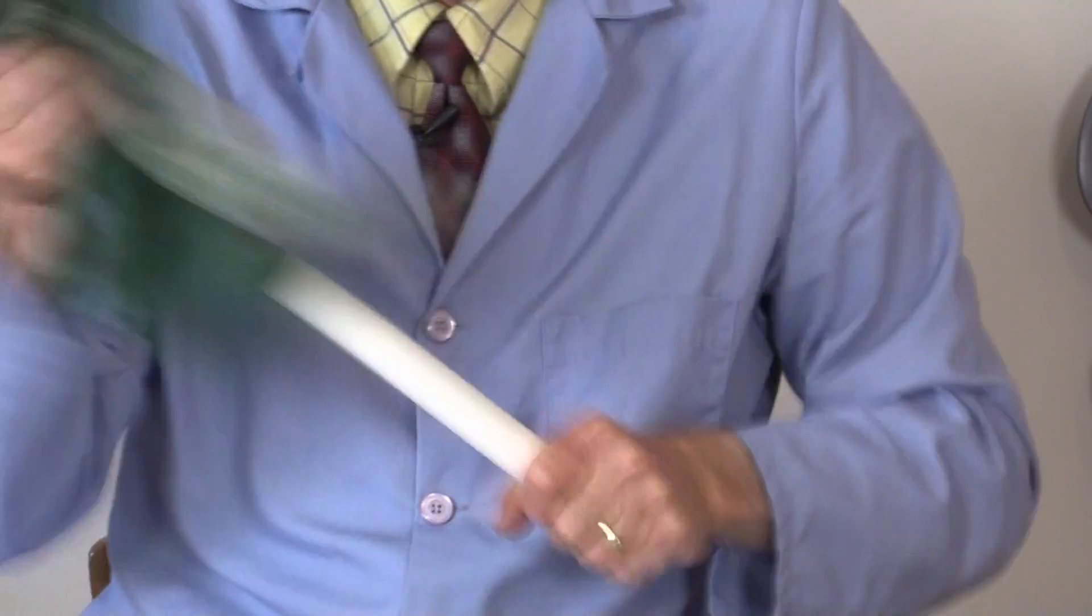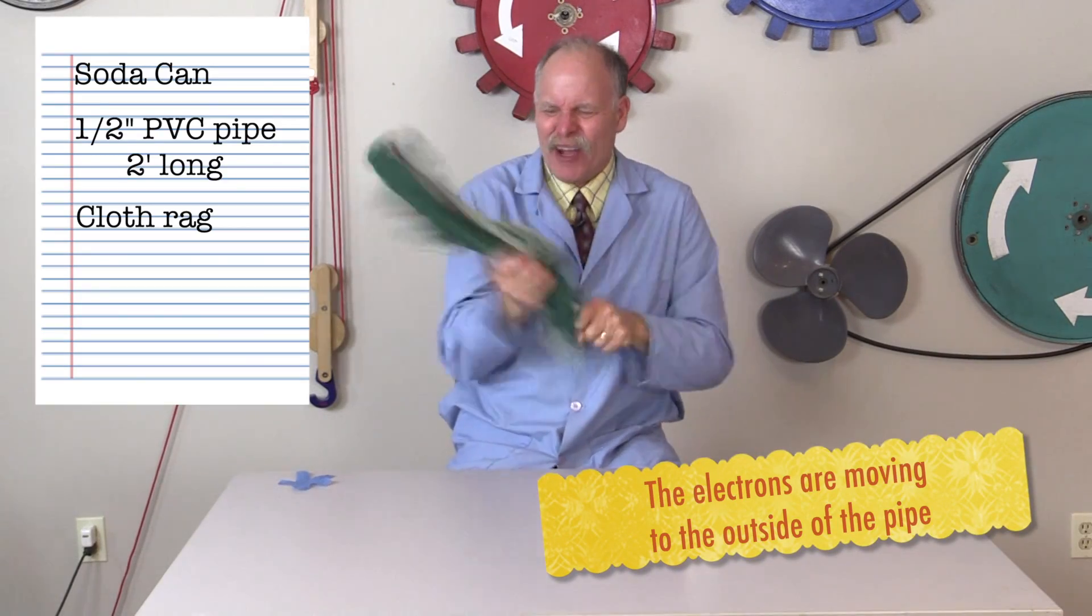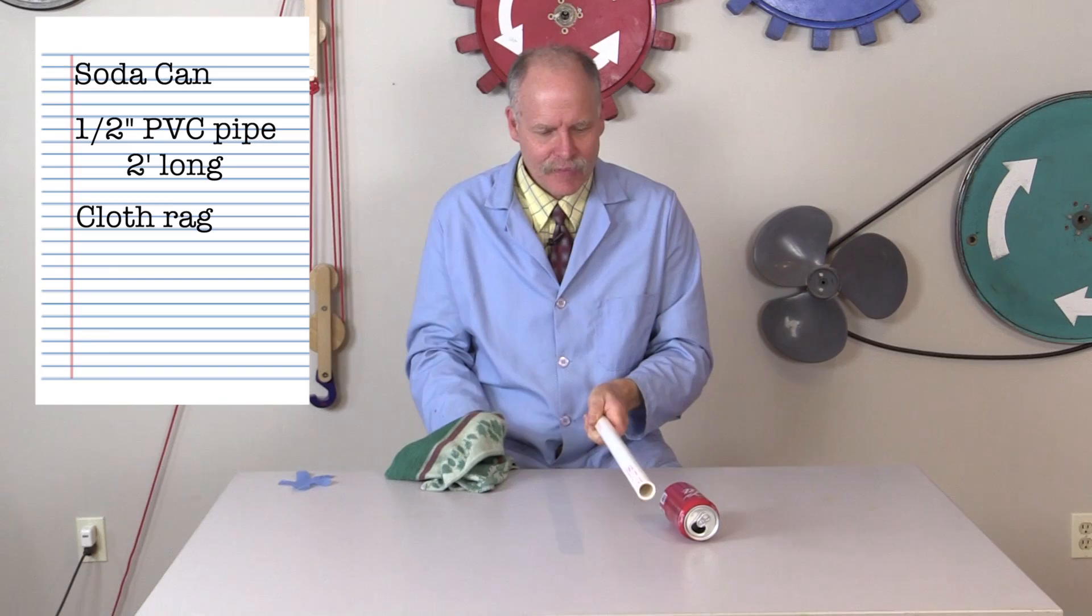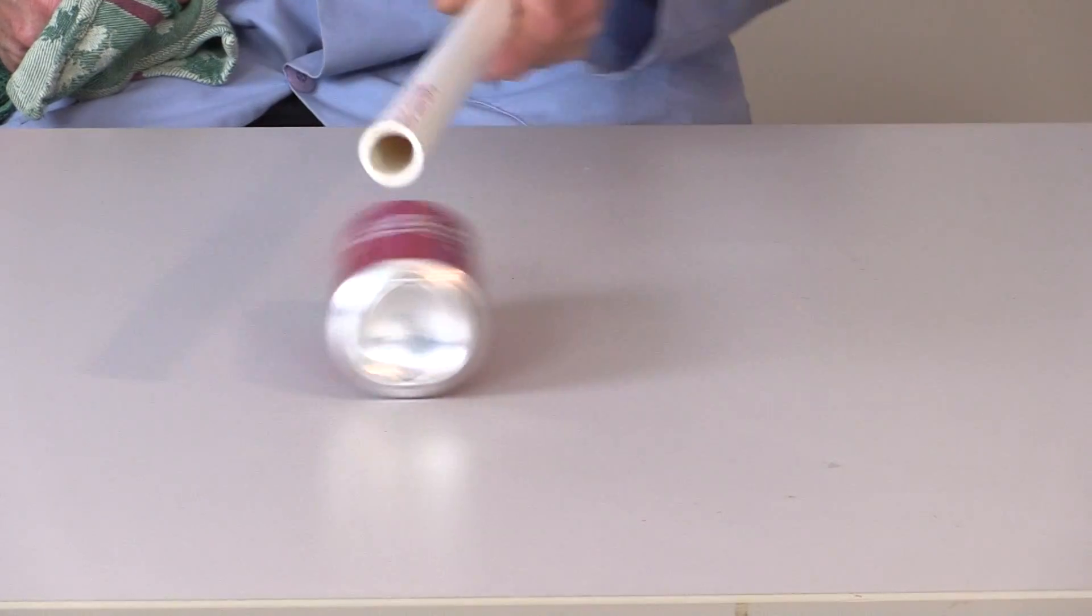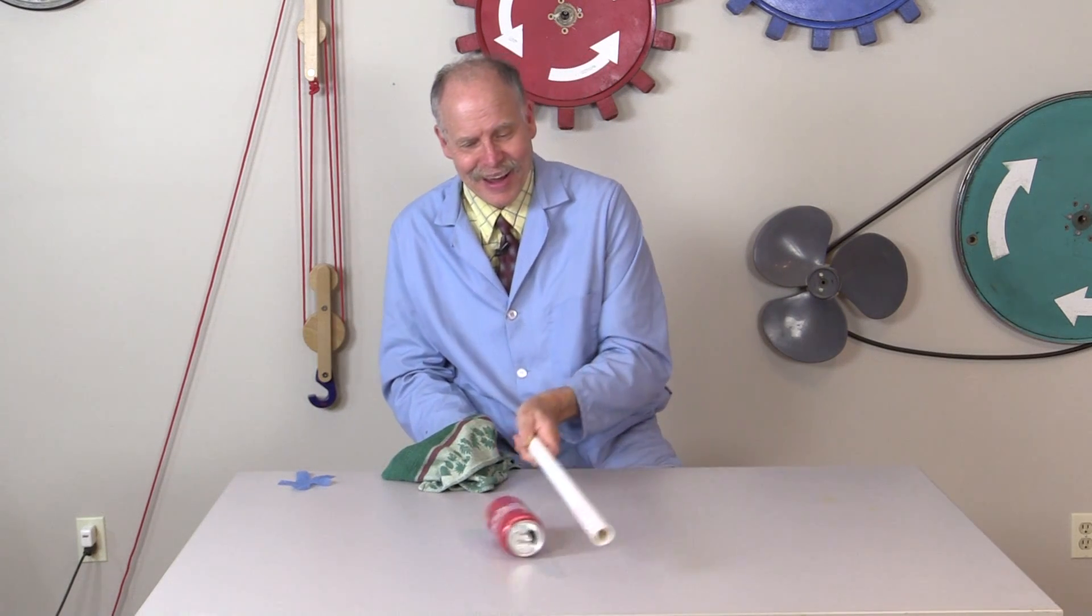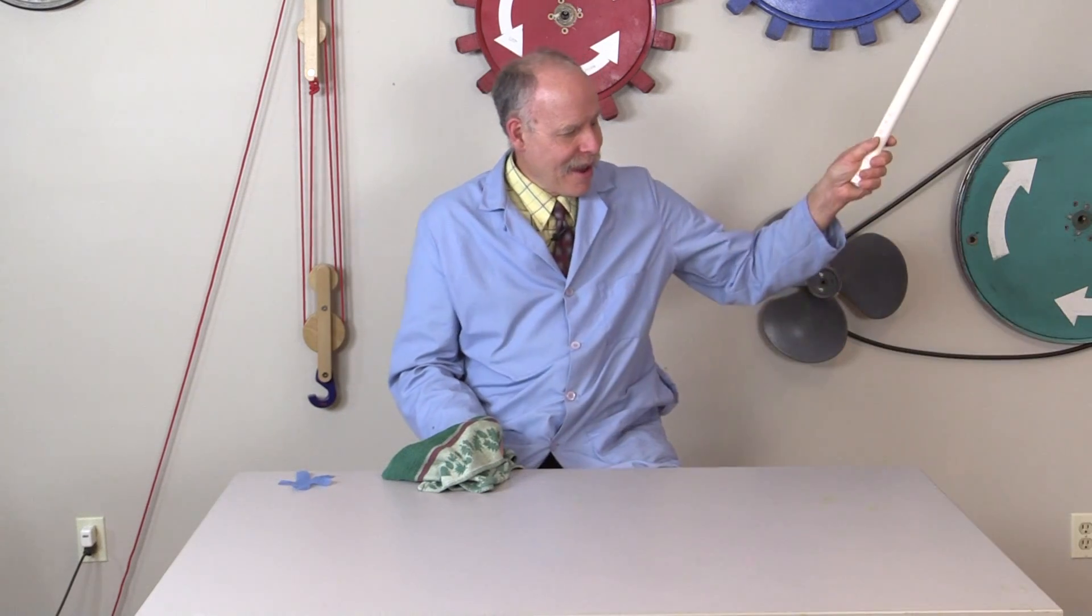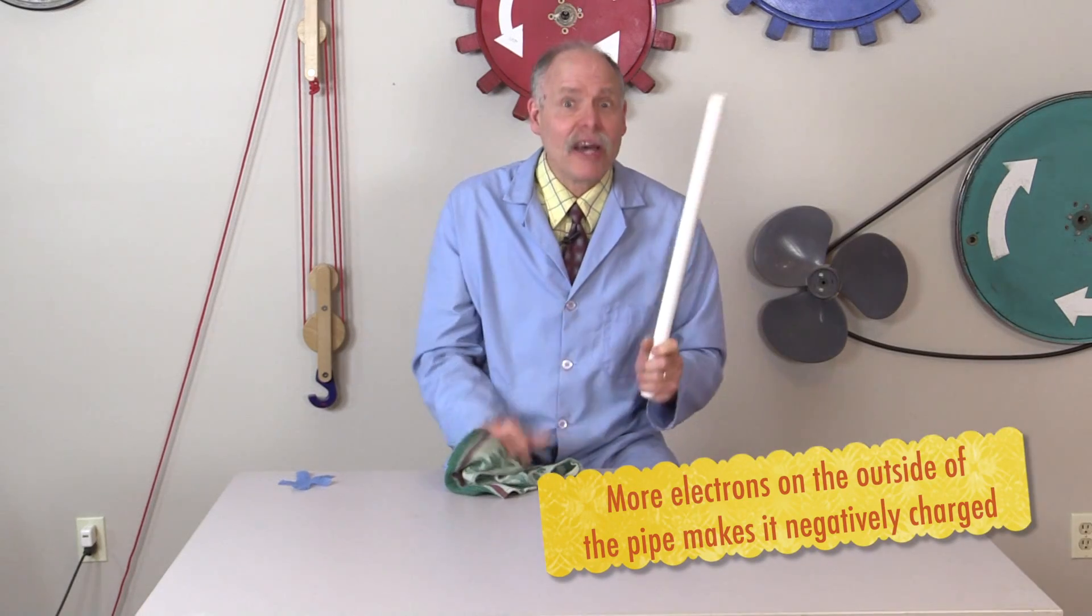We're charging up the PVC pipe with the rag, adding some electrons. Because the can was neutrally charged, it has positive, whereas this has mostly negative. Negative and positive attract to each other.